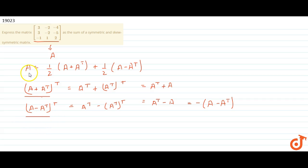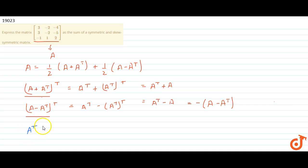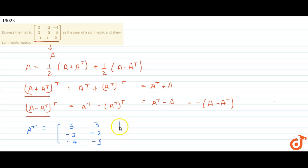To express A as a sum of symmetric and skew-symmetric matrix, we need to find A + Aᵀ and A - Aᵀ. For the given matrix A, Aᵀ equals the matrix with entries 3, -2, -4, 3, -2, -5, -1, 1, and 2.